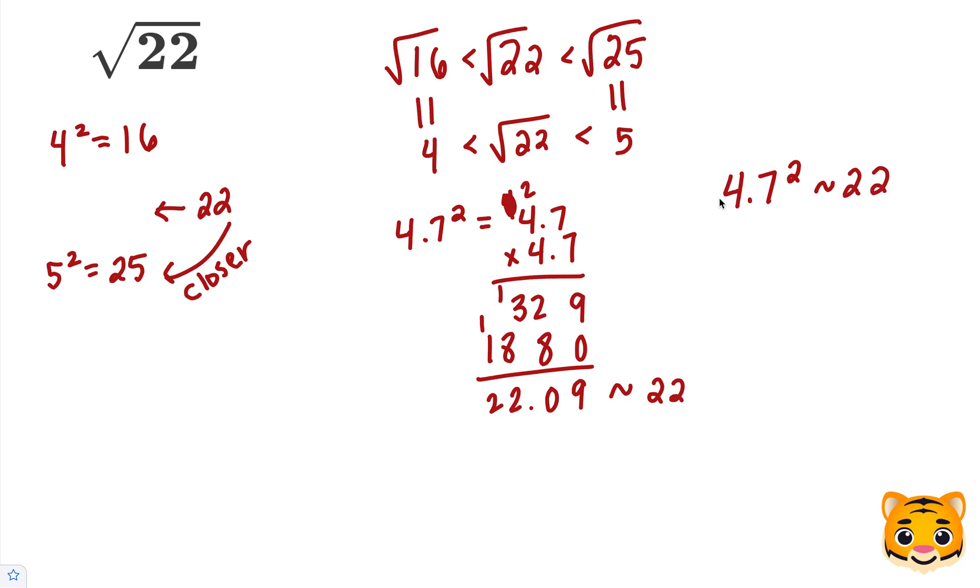Now we can take the square root of both sides. When we take the square root of both sides, the squared and the square root on the 4.7 cancel out. So we get 4.7 is approximately the square root of 22, and this will be our approximation.